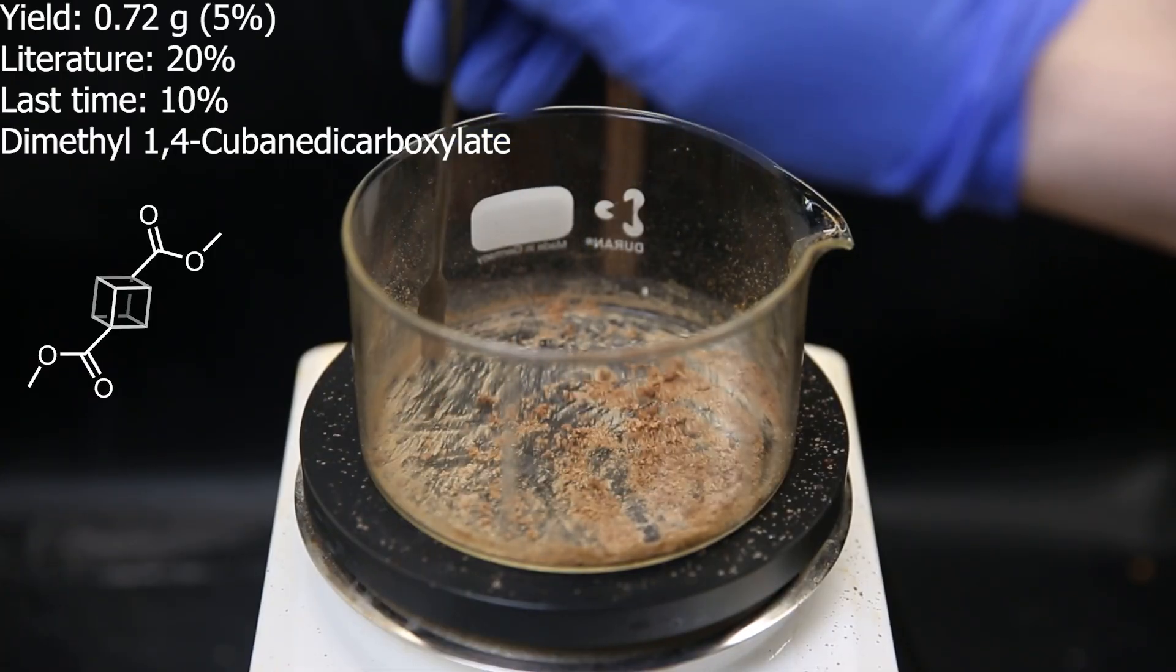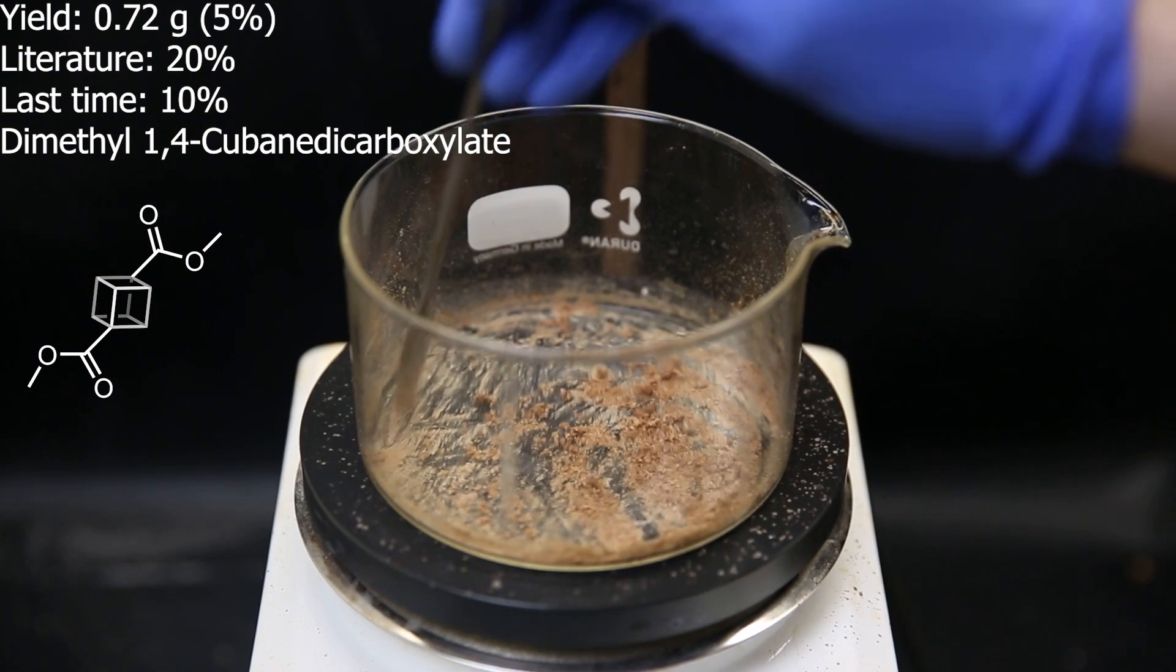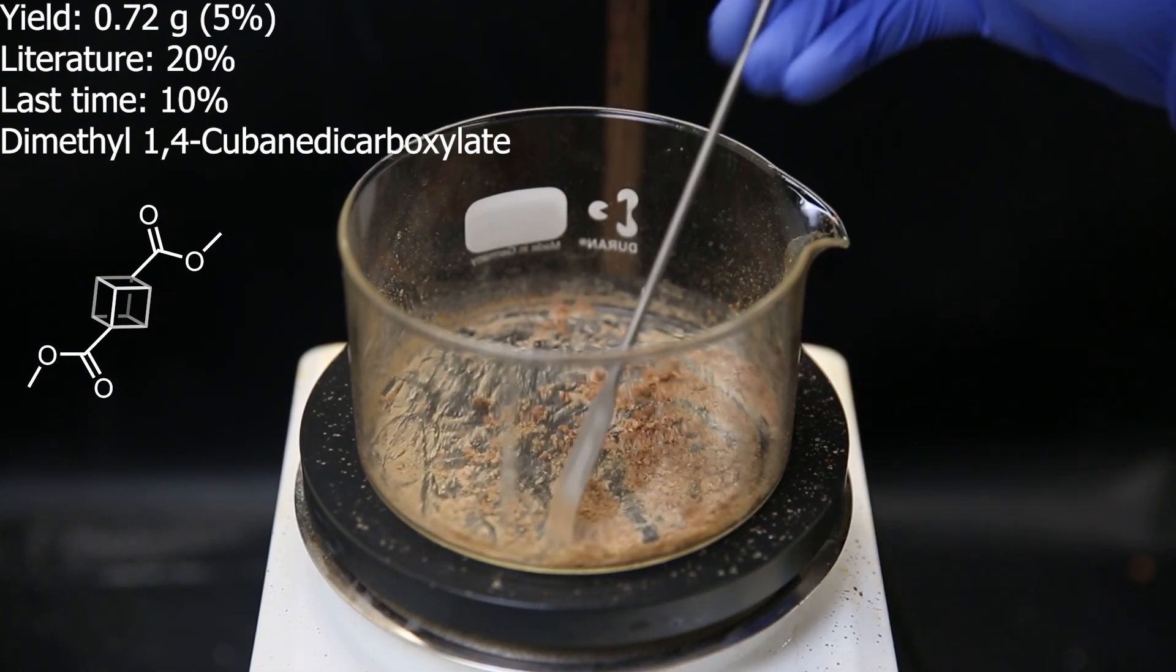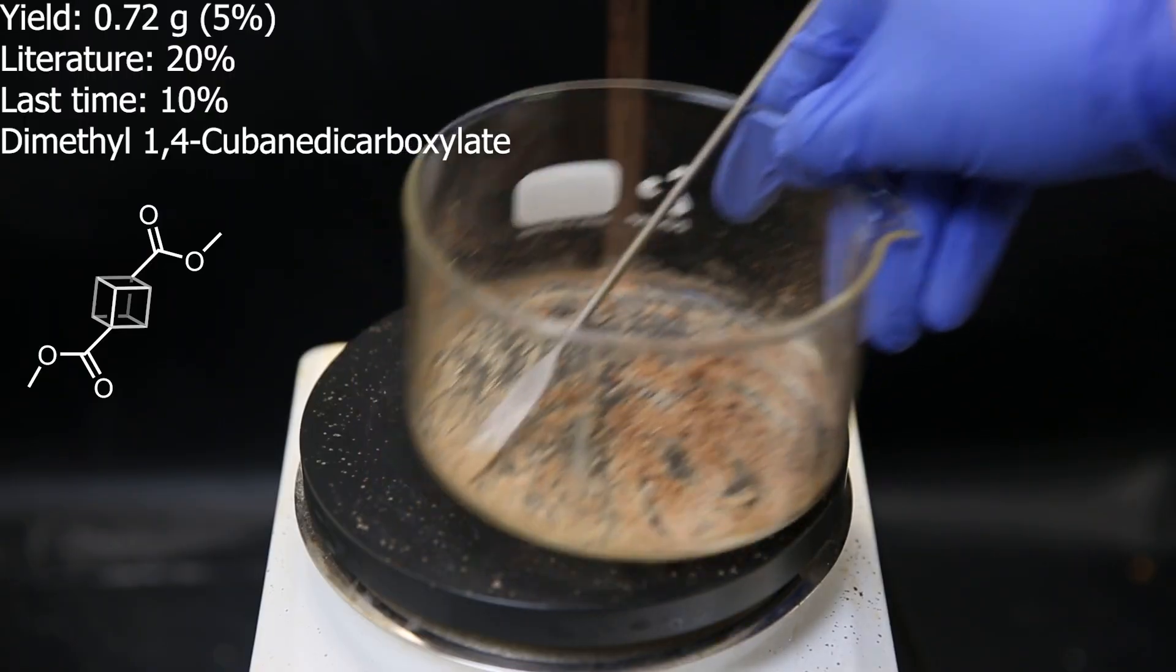The yield this time turned out to be 0.72 grams or a sad 5%, which is half compared to the last time, which was already half compared to literature, and it is also brown this time. Anyhow, I will just use it like this to make cubane.